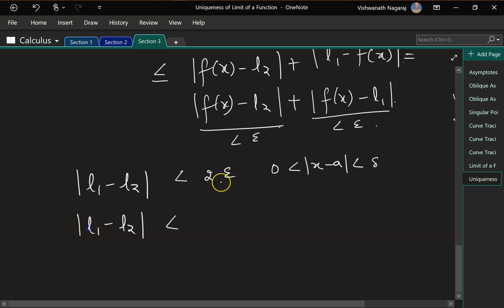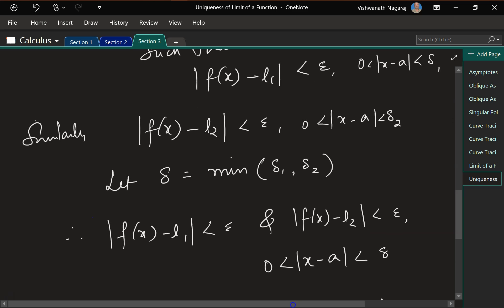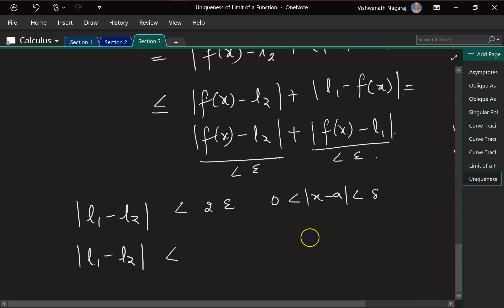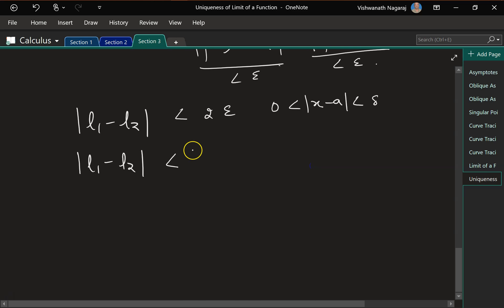Which means, remember, 2 epsilon is what? We have said let l1 minus l2 be equal to 2 epsilon. So now we do substitution again. So this becomes l1 minus l2. Now does this make sense? This will always be equal.